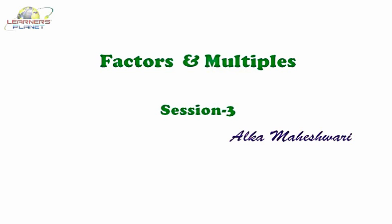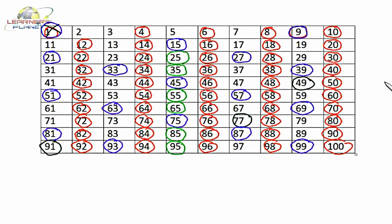Let's have a quick recap. Kids, we prepared a chart from 1 to 100 in our last session and we tried to find out the composite numbers and prime numbers from 1 to 100. All the numbers which are circled over here are composite numbers and the numbers which are not circled are prime numbers.